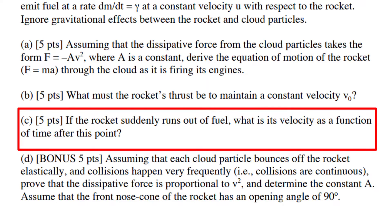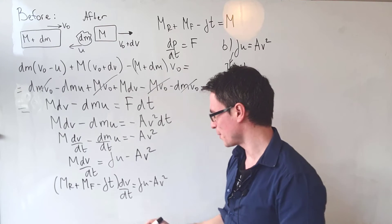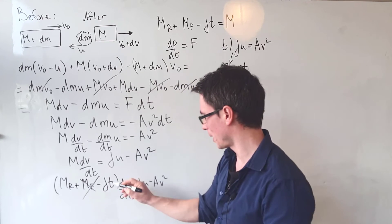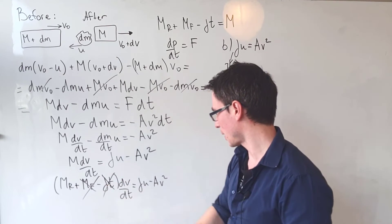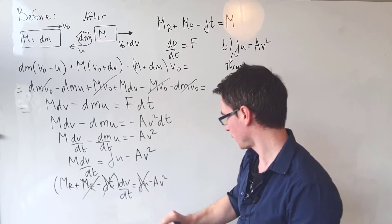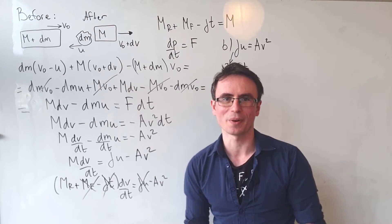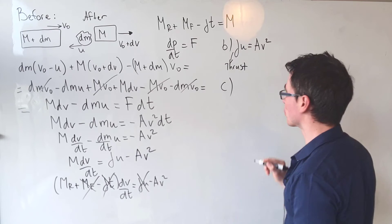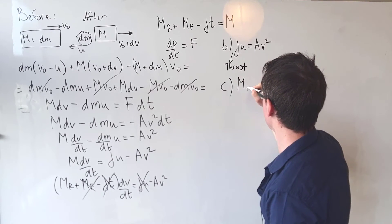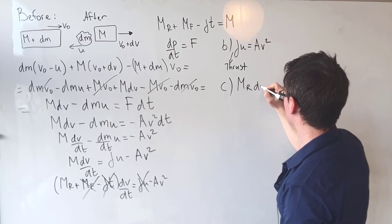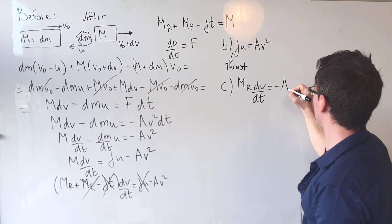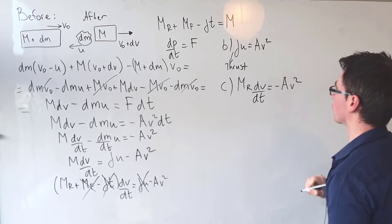Part C: if the rocket suddenly runs out of fuel, what is its velocity as a function of time? If the rocket runs out of fuel, the fuel ejection term is zero and the γu term vanishes. The equation of motion simplifies to m_R · dv/dt = -av².